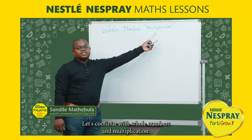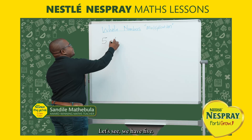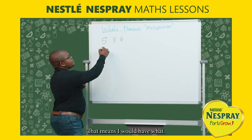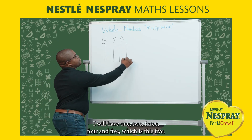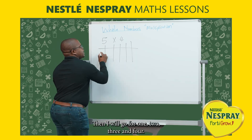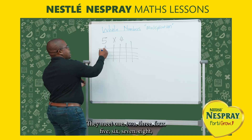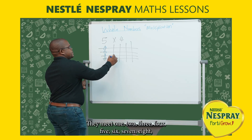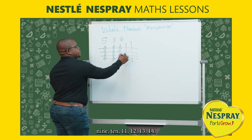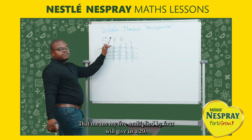Let's continue with whole numbers and multiplication. Let's say we extend it to five — five multiplied by four. That means I will have one, two, three, four, and five, then one, two, three, and four. Let's check how many times do they meet. They meet one, two, three, four, five, six, seven, eight, nine, ten, eleven, twelve, thirteen, fourteen, fifteen, sixteen, seventeen, eighteen, nineteen, and twenty.